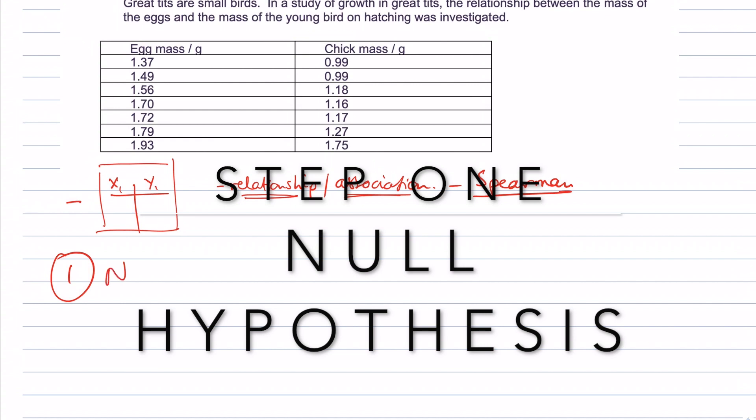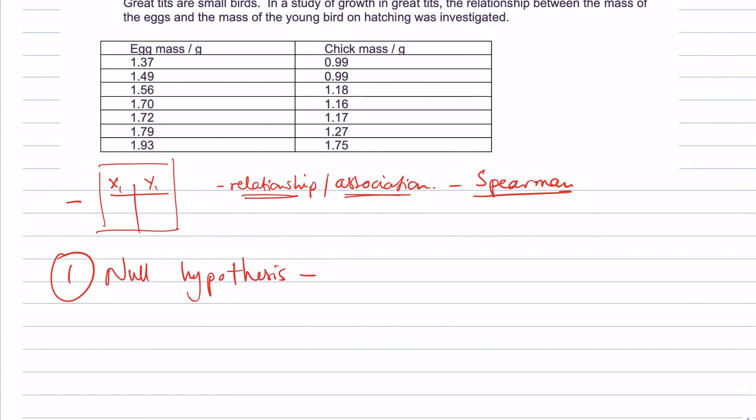Remember, step one, we have to have our null hypothesis. Our null hypothesis will be, remember, it's the opposite of the experimental hypothesis. So using our biological concepts, we would predict that as the egg mass increased, we would expect that the mass of the chick that came from the egg would increase. But the null hypothesis is not that. The null hypothesis is the unbiased position of the scientist. So we go in assuming that there is no correlation between egg mass and chick mass.